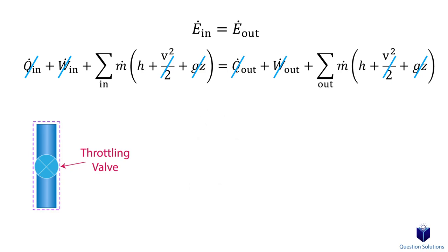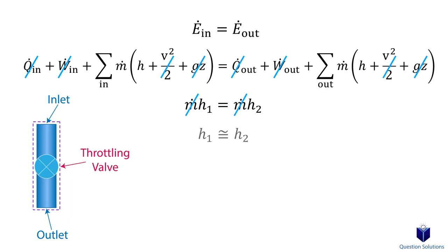Now all we're left with is mass flow and enthalpy. Normally in a throttling valve, we have one inlet and one outlet, which means mass flow will be the same. So we can cancel it out, and we're left with the simplified equation: the enthalpy value at the inlet is equal to the enthalpy value at the exit of a throttling valve.